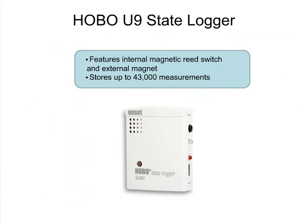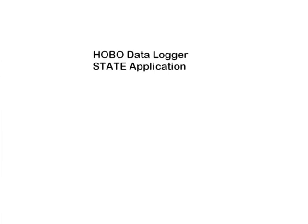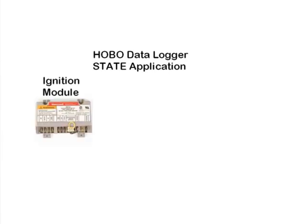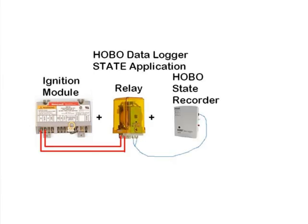In addition to temperature sensors, it is also necessary to monitor the operation of the gas valve, oil valve, or electrical contactor relay. We can perform this function with this wonderful little device known as a HOBO state recorder. It monitors a relay wired in parallel to the heat source valve, solenoid, or coil. When the heat source is on, the recorder logs the event with an on-time stamp. When the heat source turns off, the recorder again records a real-time stamp showing exactly when the burner or heat source shuts down, giving you an off-time stamp.